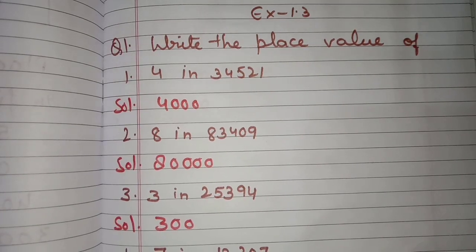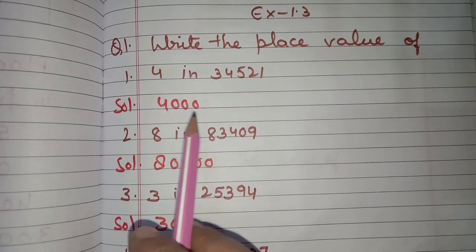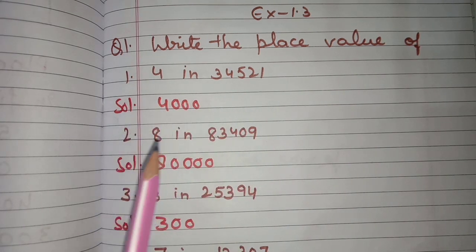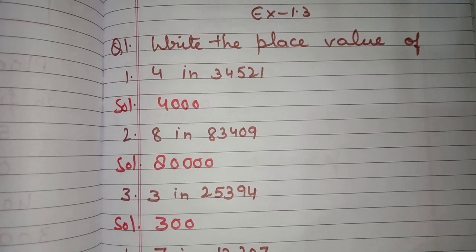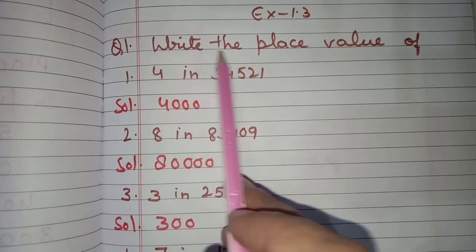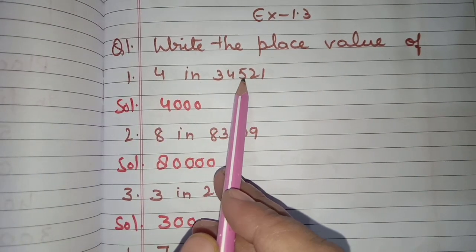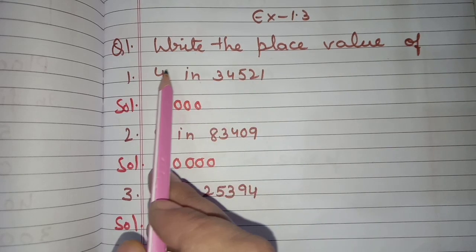Hello everyone, today we will do Exercise 1.3 of Unit 1, that is Numbers and Number Names. This exercise is based on the concept of place value. You all know that the place value of a digit depends on its position in the number. So question number one is: write the place value of 4 in 34,521.